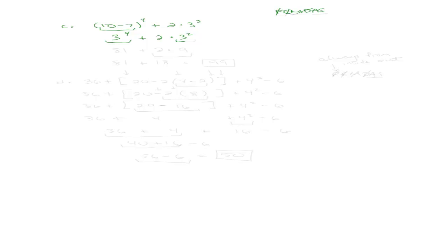Let's try: (10 minus 7) to the 4th power plus 2 times 3 squared. First I look at parentheses — I have some right here. I do what's inside first: 10 minus 7 is 3. Then bring everything else down: 3 to the 4th plus 2 times 3 squared. Now do exponents: 3 to the 4th is 81 — not 12, because it means 3 times 3 times 3 times 3. And 3 squared is 9, not 6, because it means 3 times 3.